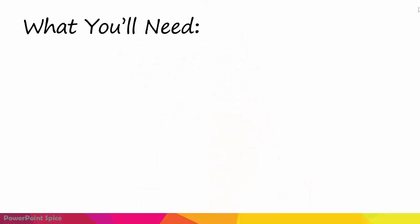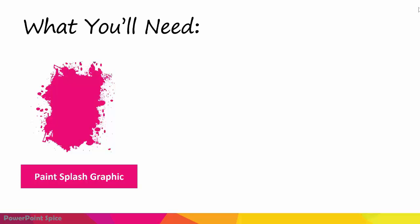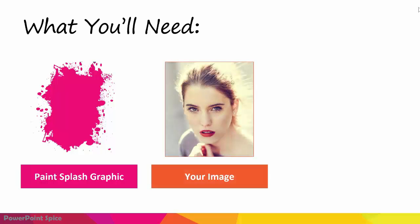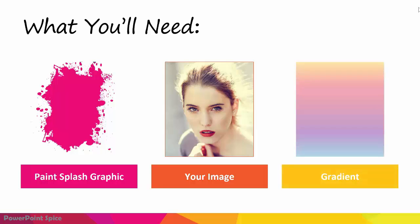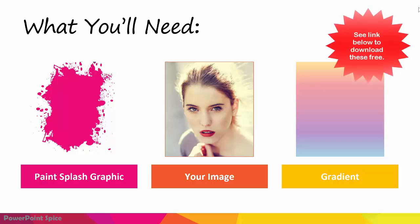Here's what you'll need to get this effect. First you'll need a paint splash graphic, and I'll go over where you can get that and how you can make it work for this effect. Then you'll need your image that you want to use for this project, and finally you want to have a gradient so that you can make it colorful and give it more of that painted look.